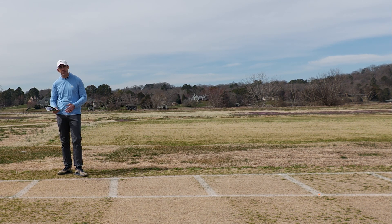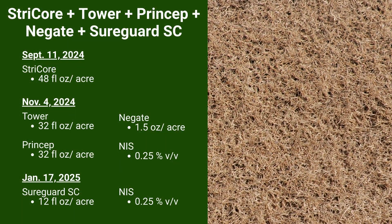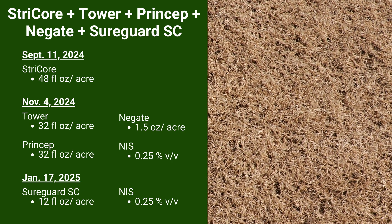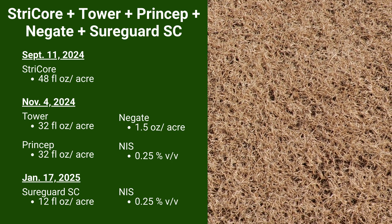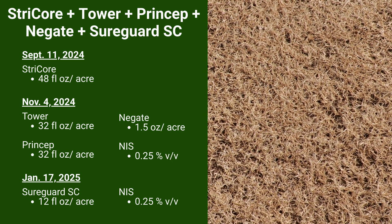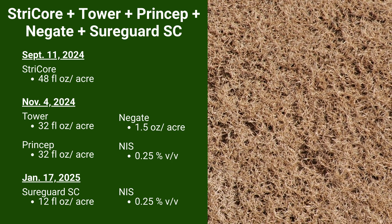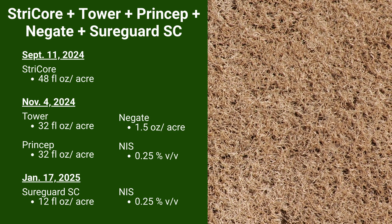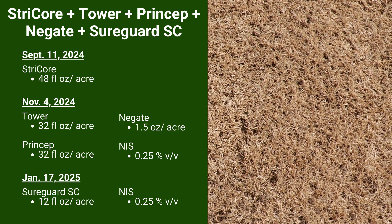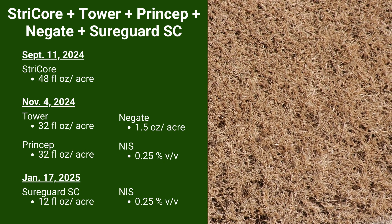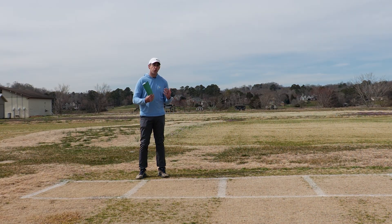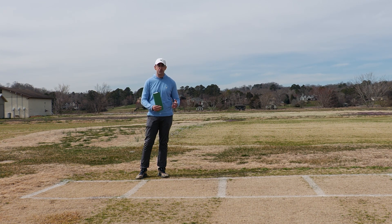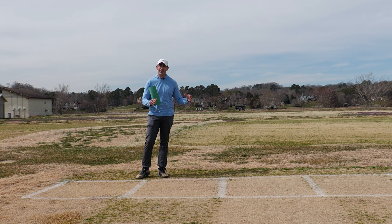The next plot uses the same concept but changes the foundation away from Stayguard — we're starting the season with Stricor, which is a Group 15 herbicide with no root inhibition. We make our application of Stricor on September 11th, come back 60 days later with the same Tower, Princep, and Negate concept used in all the non-root-pruning programs, and then follow that up in January with Sureguard. The performance here is really high. For those who ask whether you can do it without a root inhibitor — you can, and these plots are good evidence. The program will look different though: more applications on tighter intervals.